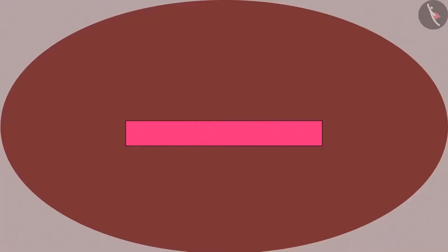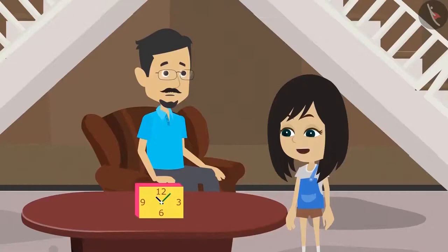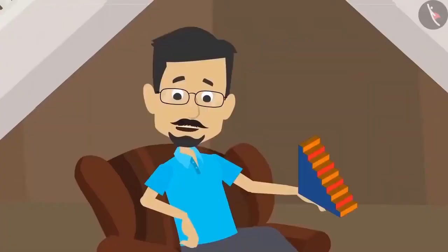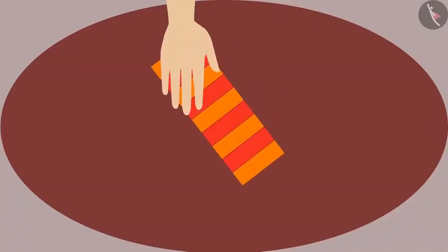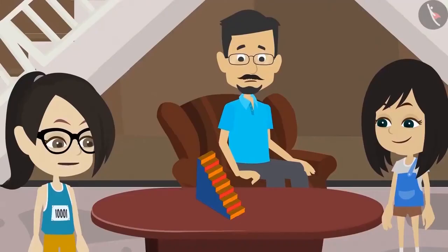For example, when you look from the top, the clock looked like a rectangle. But when you saw from the front, you could see a clock. Now I have understood a little. Let me explain this to you with another example. I have a toy that is in the shape of a staircase. I will place this staircase on the table here. Now we will make a picture of it. That will be fun.